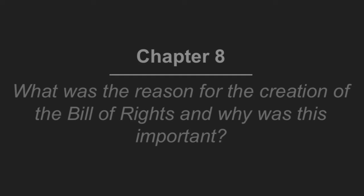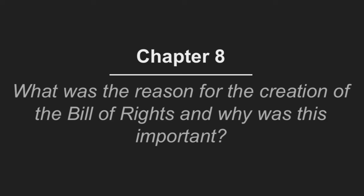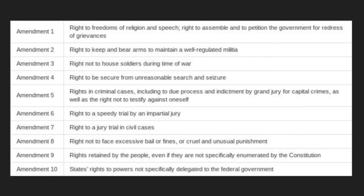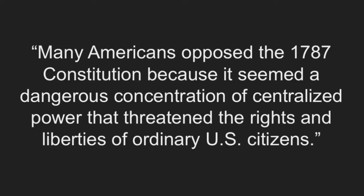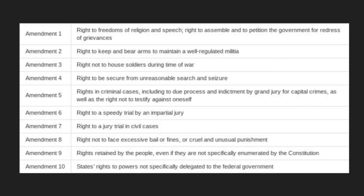Question 8: What was the reason for the creation of the Bill of Rights and why was this important? The Bill of Rights was created because without it, many states would not have accepted the Constitution. According to U.S. History by OpenStax, many Americans opposed the 1787 Constitution because it seemed a dangerous concentration of centralized power that threatened the rights and liberties of ordinary U.S. citizens. The protection of individual rights and freedoms were very important to many citizens and states. Some states even required a Bill of Rights to be added to the Constitution in order for them to accept it. By adding the First Ten Amendments to the Constitution, the people were more satisfied as it explicitly stated individual rights granted to them. By adding Amendments 9 and 10 especially, anti-federalist fears of an overpowered centralized government were lessened, allowing for the Constitution to be accepted.